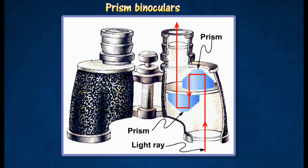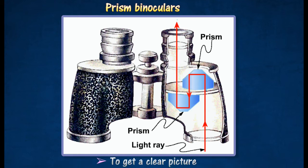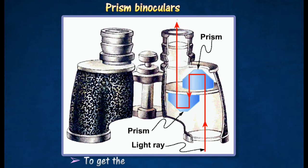The focusing wheel functions to get a clear picture. The adjustable eyepiece helps to get the clearest vision of the picture.